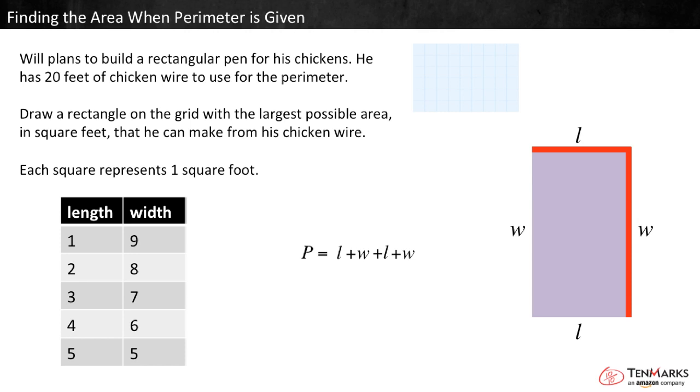We need to know which of these length and width pairs would lead to the largest area. So, find the area of each by multiplying length and width. 25 is the largest area, so we need to draw a rectangle with a length of 5 and a width of 5.